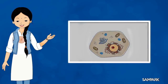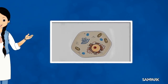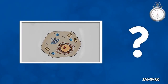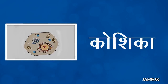अगला चित्र है सजीवों के शरीर की सबसे सूक्ष्म यानी छोटी इकाई। सजीवों का शरीर ऐसी ही अनेक इकाइयों से मिलकर बना होता है। अब इसका क्या नाम है? ये कोशिका कहलाती है बच्चों।